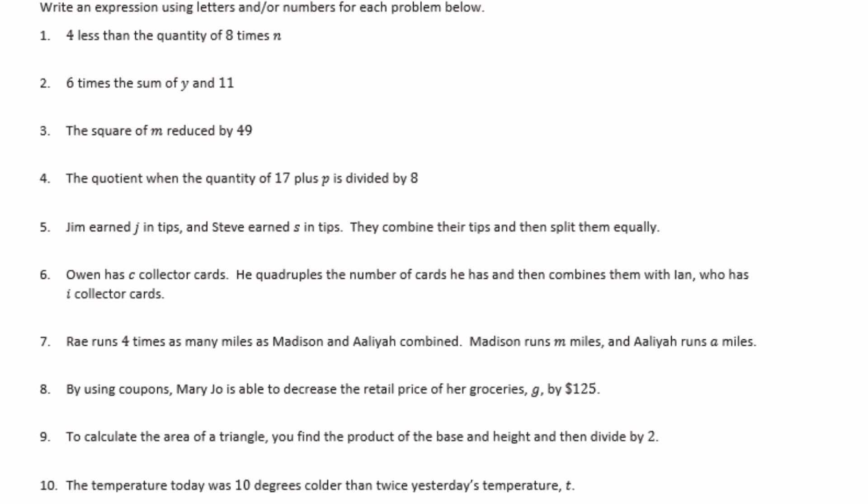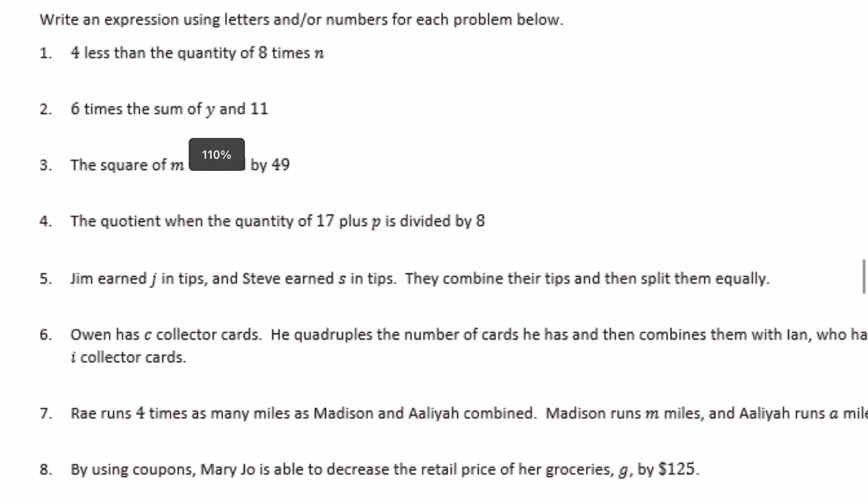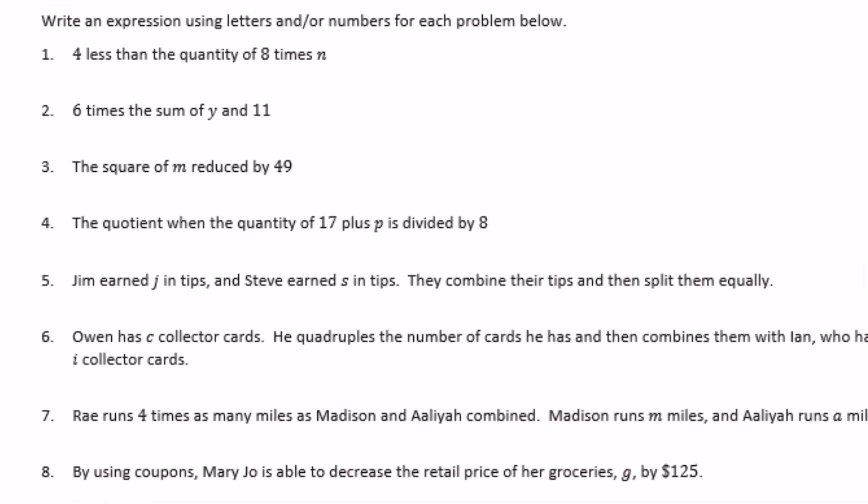Number one: four less than the quantity of eight times n. The quantity means that 8 times n needs to stay together, so we have 8n. Then we want four less than that. Four less means we subtract. Less than means minus, so 8n - 4.